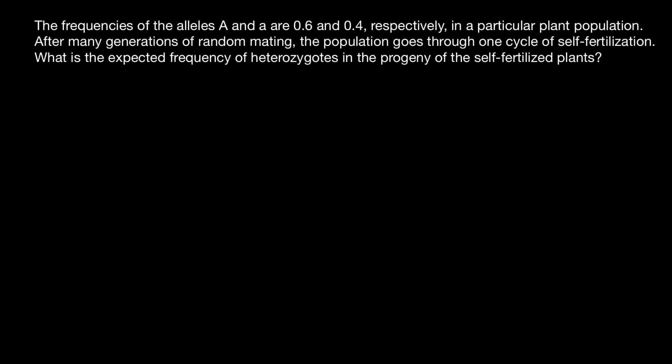Hello and welcome to Nikolai's genetics lessons. Today's problem is: the frequencies of the dominant allele A and recessive allele a are 0.6 and 0.4 respectively in a particular plant population. After many generations of random mating, the population goes through one cycle of self-fertilization. What is the expected frequency of the heterozygotes in the progeny of the self-fertilized plants?